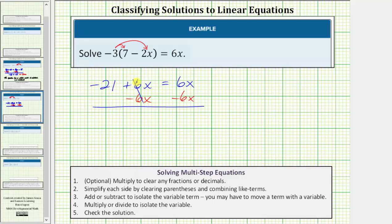6x minus 6x is zero. The left side simplifies to negative 21. So we have negative 21 equals 6x minus 6x is zero. So once again notice how we're trying to isolate the variable, the variable terms simplified out and we're left with an equation.